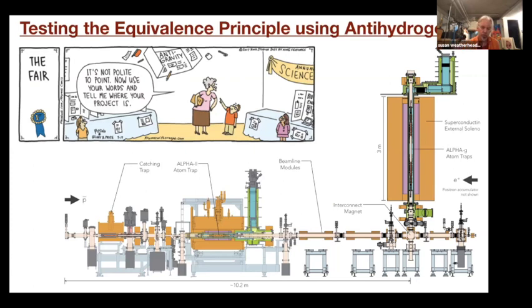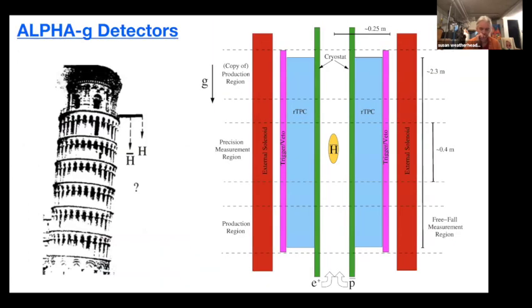I showed this cartoon of all the detectors. Now I talked about the catching trap and alpha 2. Now I want to talk about alpha g. Alpha g is our gravity measurement detector. Literally, we're just going to make the antihydrogen and drop it, although I'll show we're not going to drop it per se. This is what it looks like. It's a vertical trap. The trap is now vertical. It's two meters high. You can see the scales on there.